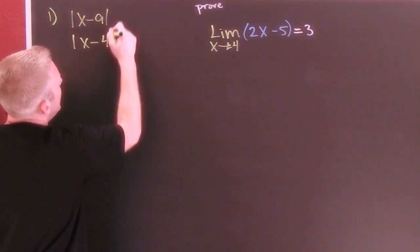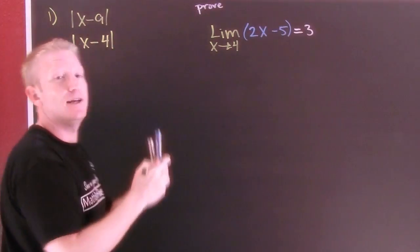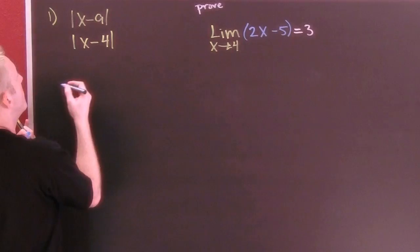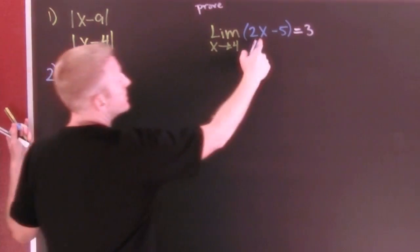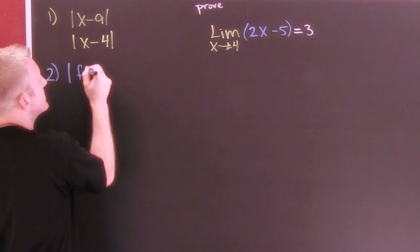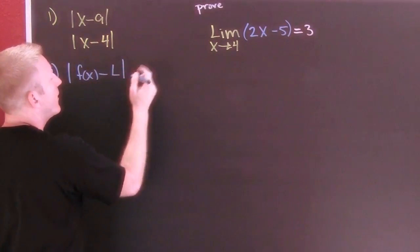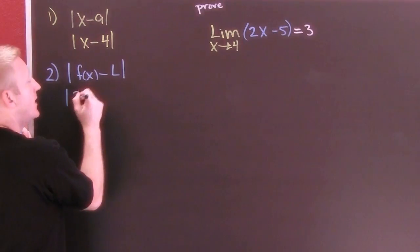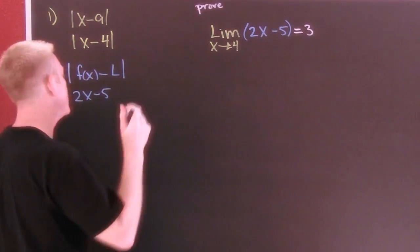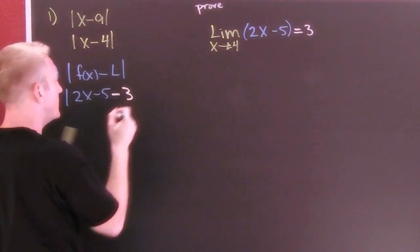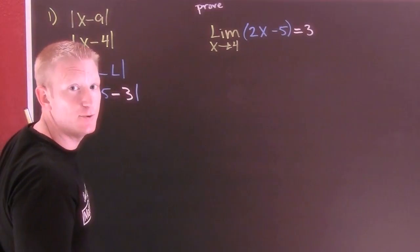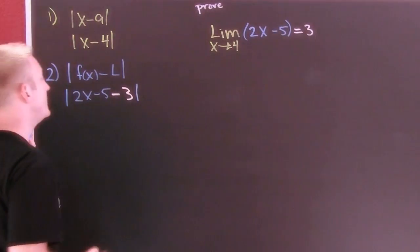So I'm looking for that in part two. I'm going to evaluate this function minus this limit. So then in part two, my function is the thing that I'm taking the limit of. I'm looking for it: f(x) minus L. And then this is 2x minus 5, wait for it, minus 3 because that was my limit.